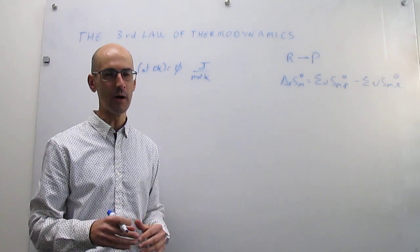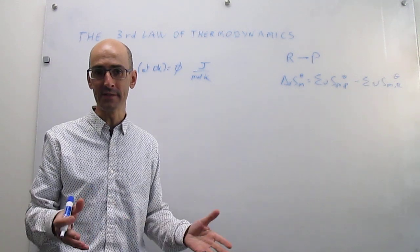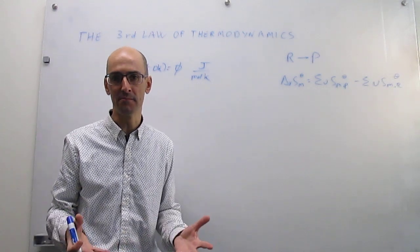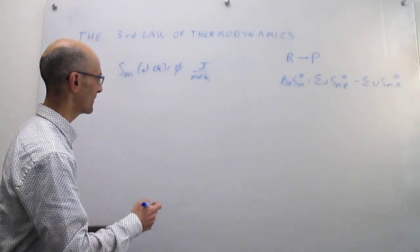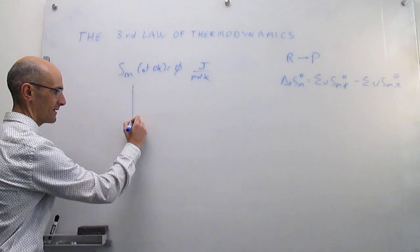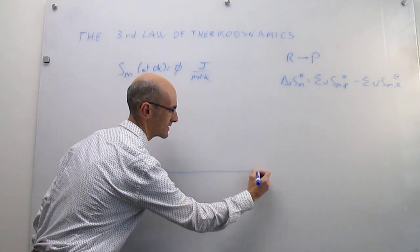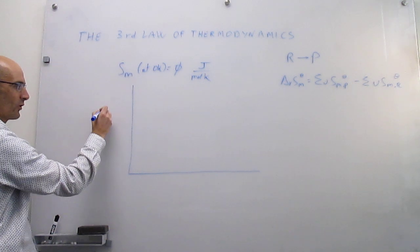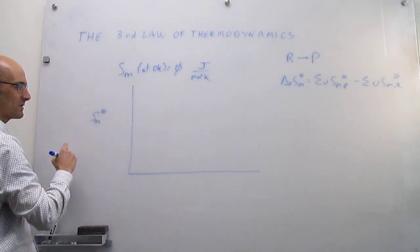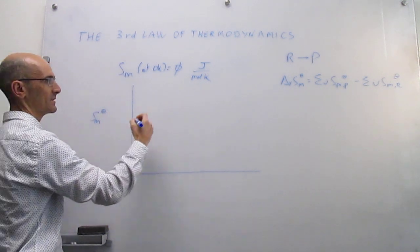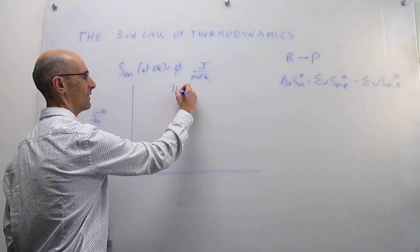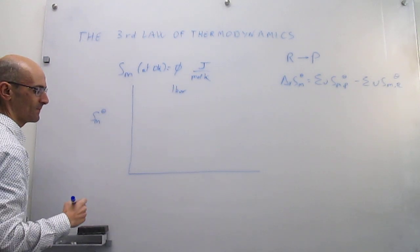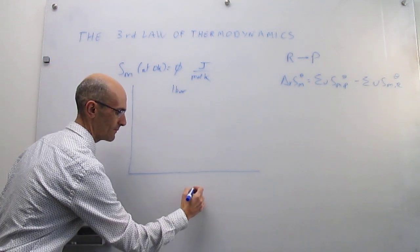We're going to show how this works for a different substance — for example, for oxygen. We're going to do this graphically so you can see how this works. Here's going to be the molar entropy, and we're going to be working at standard conditions, so the pressure is going to be one bar, and we're going to have pure oxygen. This is going to be temperature.